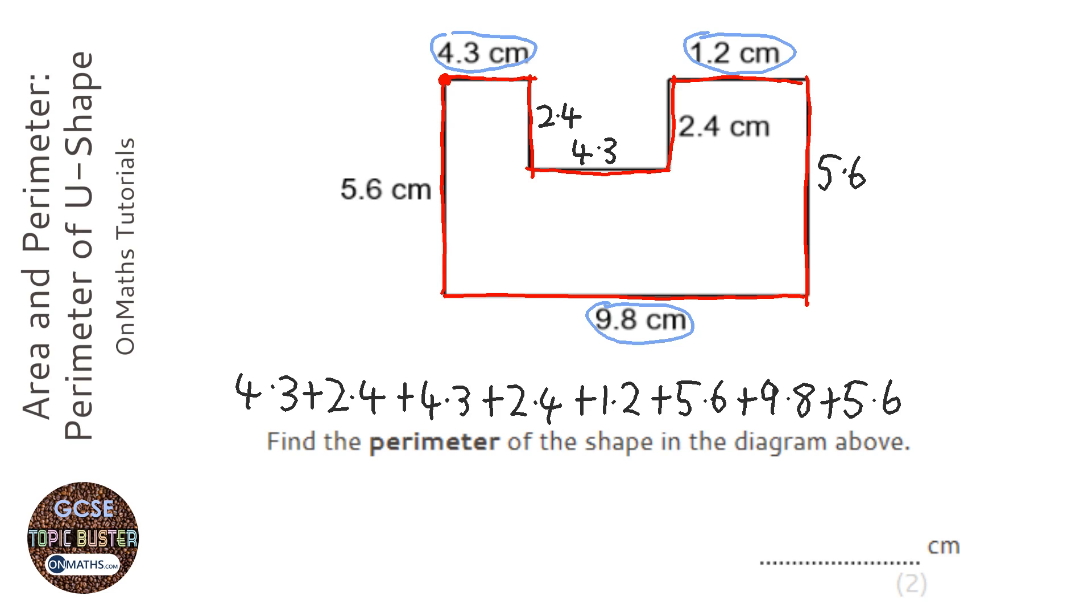So I'm just adding that all up on my calculator, and I get the answer of 35.6. Now the units are going to be centimetres because perimeter is a distance.